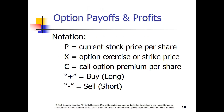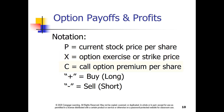As we go forward looking at various aspects of options, we'll be using the notations shown on the slide. P will indicate the current stock price per share. X will indicate the strike or exercise price. C will represent the call option price or premium on a per share basis. A plus sign indicates buy, a minus sign indicates sell. For example, plus P minus C means buy the stock, sell the call.